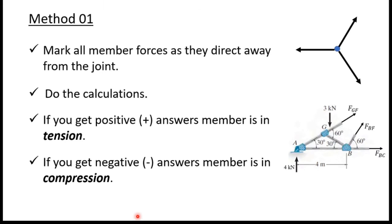In this example I will use Method 1. If you watched the method of joints videos, I explained two methods — Method 1 and Method 2. Don't worry about Method 2; in this example I will use Method 1. Method 1 says: mark all the member forces as directed away from the joint. Like in this figure, you can see these forces are marked directed away from the joint. Then do the calculations, taking the sum of horizontal and vertical forces and taking moments. If you get positive answers the member is in tension, and if you get negative answers the member is in compression.